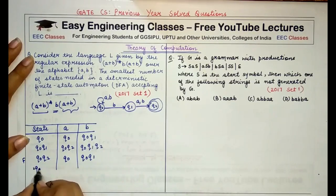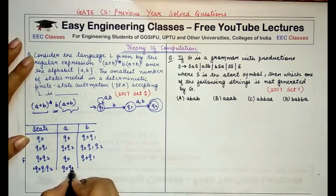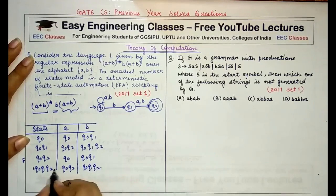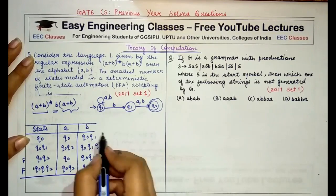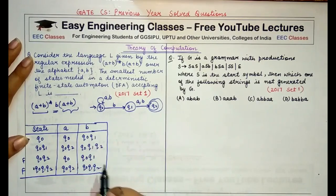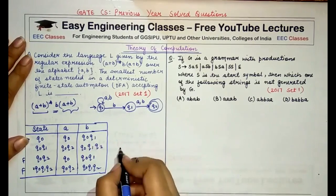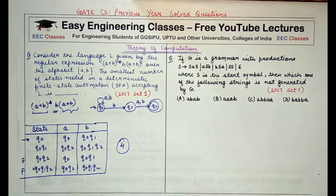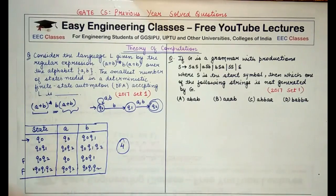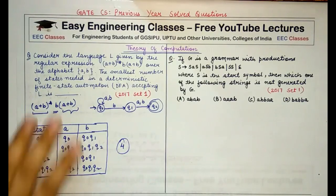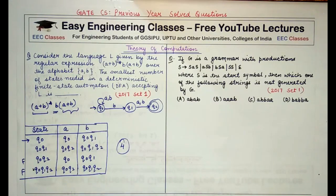Coming to state {q0, q1, q2}: reading a, I go to {q0, q2}, and reading b, I go to {q0, q1, q2}. This will also be a final state. So these are the four states possible in the DFA, and the answer is four. This is a quick way of converting from the NFA — two non-final states, two final states, four total states in the DFA.